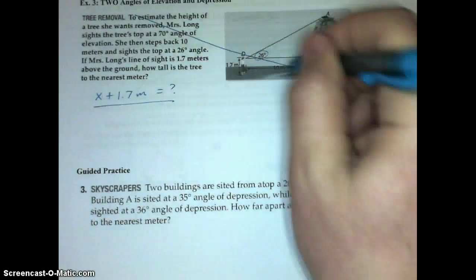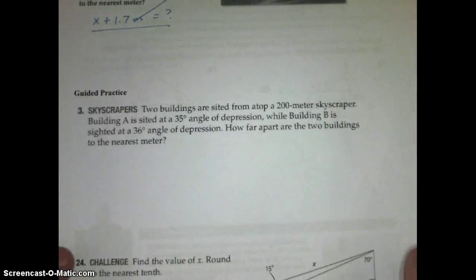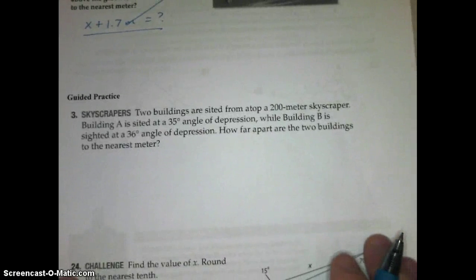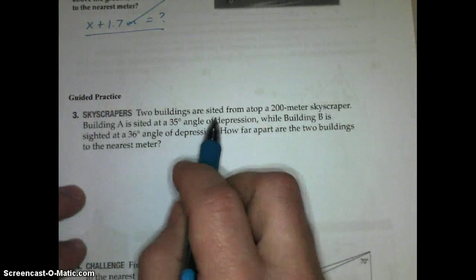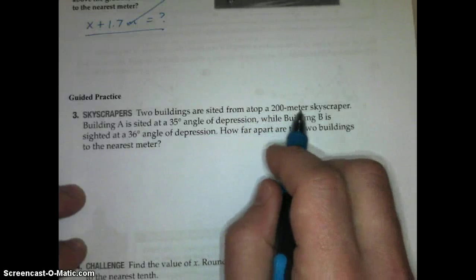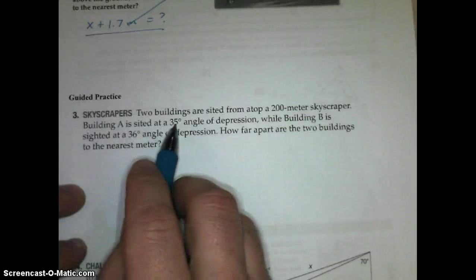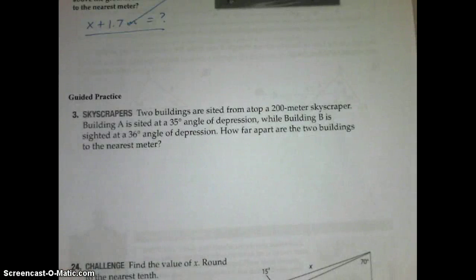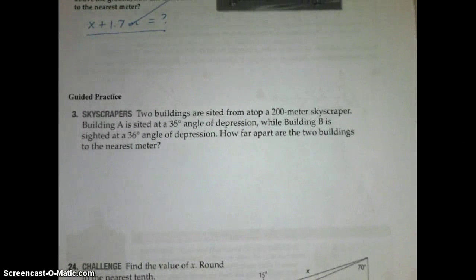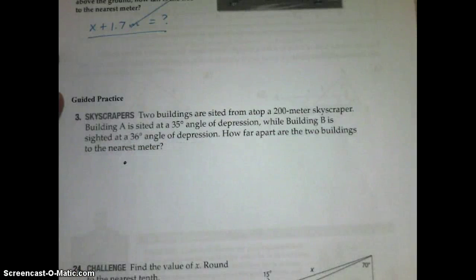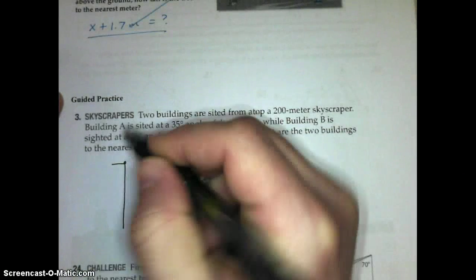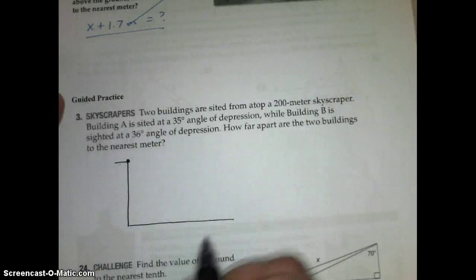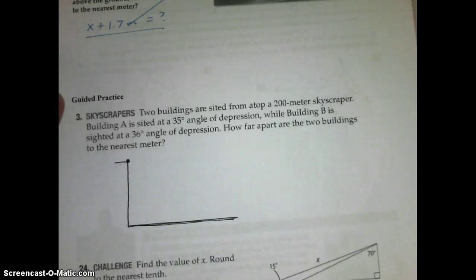We are actually going to skip over example 3. After looking at that, it is not the best example to illustrate what happens when we have two angles of elevation or depression. So, we're going to use this guided practice number 3 as our example 3. Two buildings are sighted from atop a 200 meter skyscraper. Building A is sighted at 35 degree angle of depression, while building B is sighted at a 36 degree angle of depression. How far apart are the two buildings to the nearest meter? You'll notice we don't have a picture, so I'm going to help you draw that out. We want the top of a skyscraper to be here. Then we need the level of the other two buildings. We're going to assume they're spotted along the same horizontal.